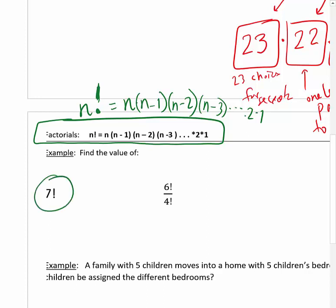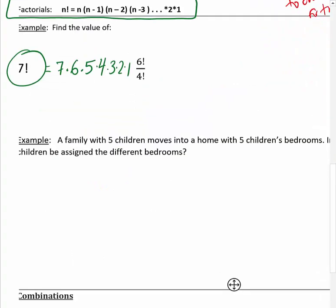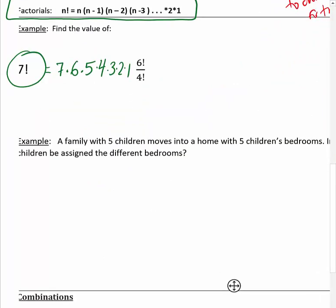For example, 7 factorial means take 7 and multiply it by 1 less than that (6), then 5, then 4, all the way down to 1. So 7 × 6 × 5 × 4 × 3 × 2 × 1 equals 5,040.